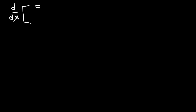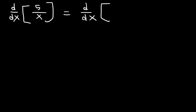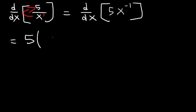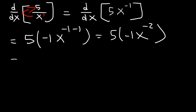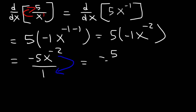Now let's use the constant multiple rule with rational functions. Differentiate 5 divided by x. We need to rewrite this expression by moving x to the numerator. Right now it's x to the 1 on the bottom, but it becomes x to the negative 1 in the numerator. The constant is 5, and f(x) is x to the negative 1. Differentiating x to the negative 1 using the power rule gives negative 1 times x to the negative 1 minus 1. Negative 1 minus 1 is negative 2. 5 times negative 1 is negative 5. Moving the variable to the bottom gives us negative 5 over x squared. That is the answer.